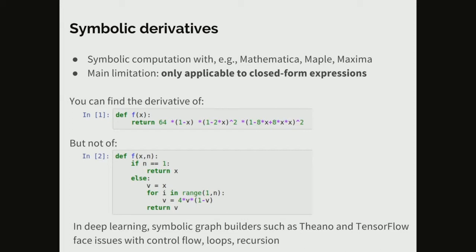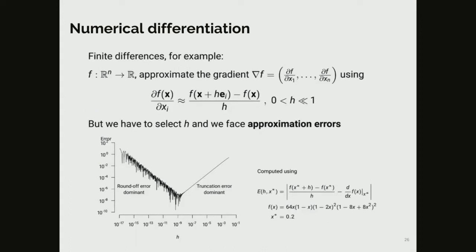Another problem with symbolic derivatives is that they are only applicable to closed-form expressions. You can differentiate something that looks like a mathematical formula, but you cannot get the derivative of something with algorithmic control flow. This is an important limitation that Theano and TensorFlow face — you are not free to implement your algorithm freely; you must use the limited symbolic graph mini-language to express control flow operations.